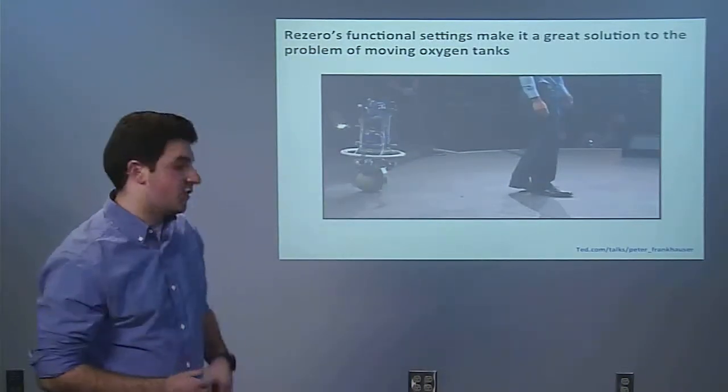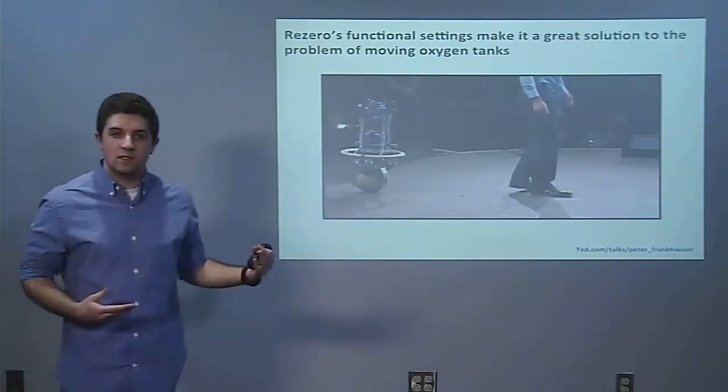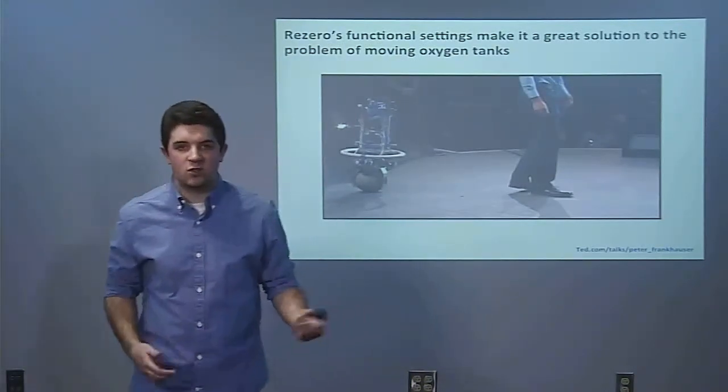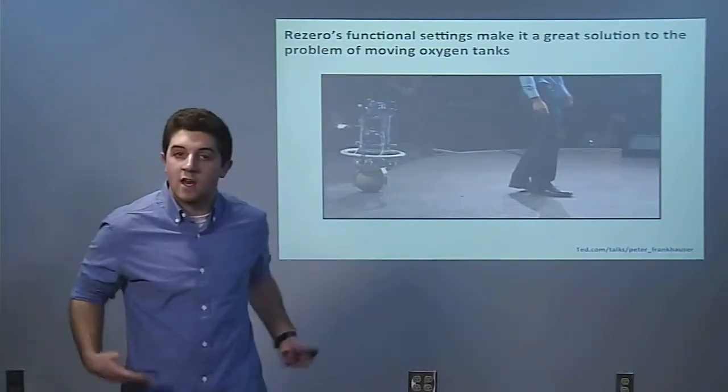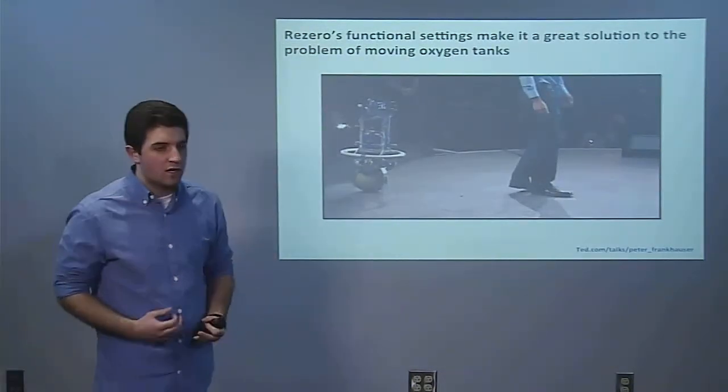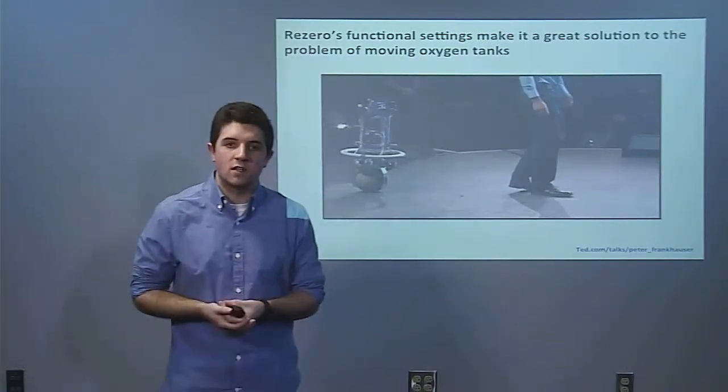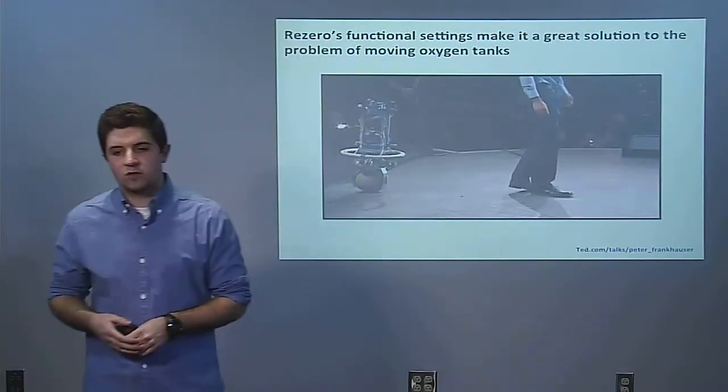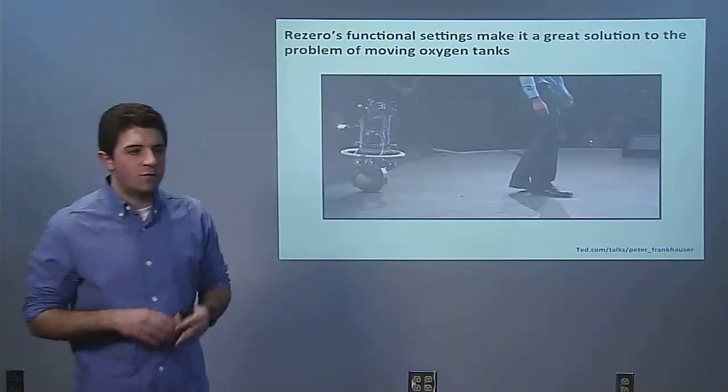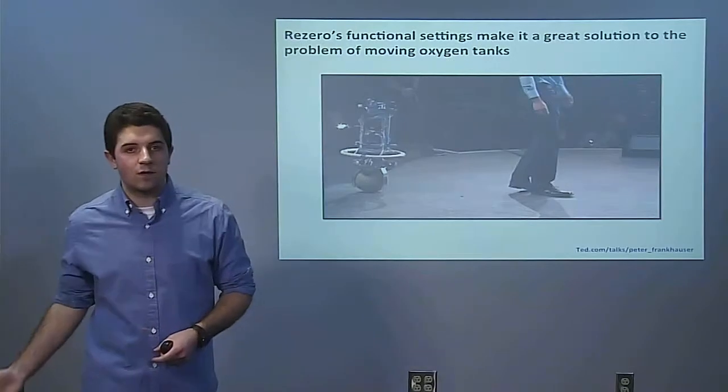The third mode is a follow the leader mode. You tell it to follow that object or that person, and it will keep a constant distance from that person. The last mode is an orbiting mode. This is when it will orbit an object or a person like a planet, like the moon does the earth. So as you can probably imagine, these are going to be really useful functions for a person who wants ReZero to be close, but maybe not too close, or maybe not too far away. These functions are what really make ReZero an ideal solution to the problem of having to carry around an oxygen tank.